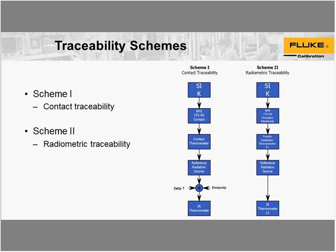For traceability schemes — we're doing traceable work here and we have traceability back to the SI. For contact traceability, we're getting traceability for our thermal radiation source with a contact thermometer — either a PRT, a thermometer, or a thermocouple — which has traceability through a National Metrology Institute to the SI. This contact thermometer is used to get a reference temperature for the thermal radiation source.